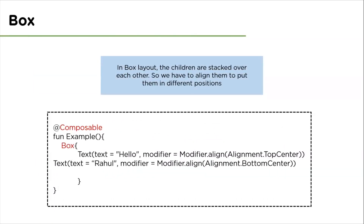In box layout, the children are stacked over each other by default, so we have to align them to put them in different or proper positions. We use the align modifier to set the position or alignment for children elements. As we can see in this example, we have used the align modifier and we can see alignment.topCenter and alignment.bottomCenter, which are alignment options applied to the child user interface.